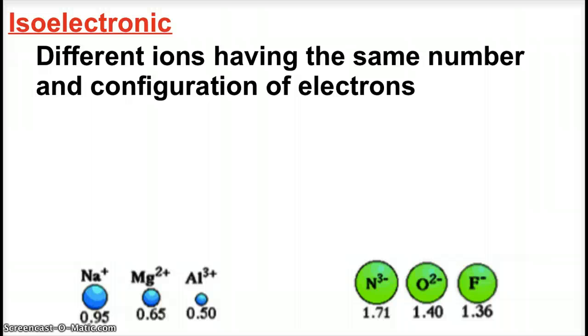Now, since we're talking about ionic size, we also remember that we have these things called isoelectronic species. These are different ions that have the same number and configuration of electrons. Sodium ion, magnesium ion, and aluminum ion all have 10 electrons just like neon, but they have a different amount of protons in the nucleus. The sodium ion is 0.95 angstroms, magnesium is smaller, aluminum is even smaller.